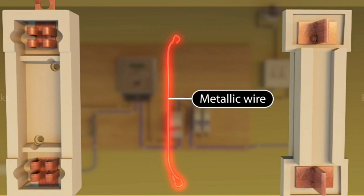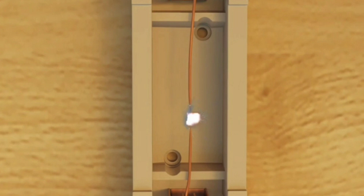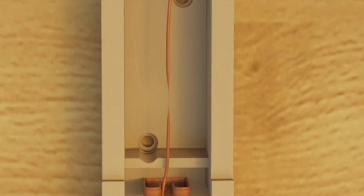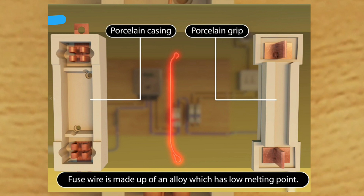The heating effect of electric current is also utilized in electric fuses for protecting household wiring and electrical appliances. A fuse is a short length of thin copper wire having a low melting point. The fuse wire gets heated too much, melts, and breaks the circuit, stopping the current when it rises too much due to overloading or short circuit.